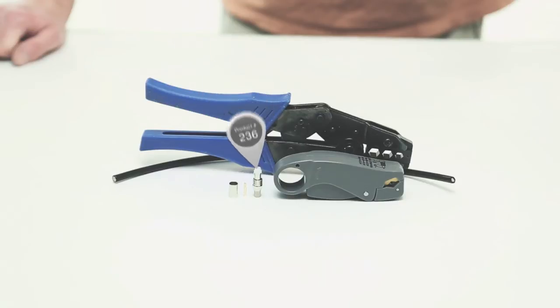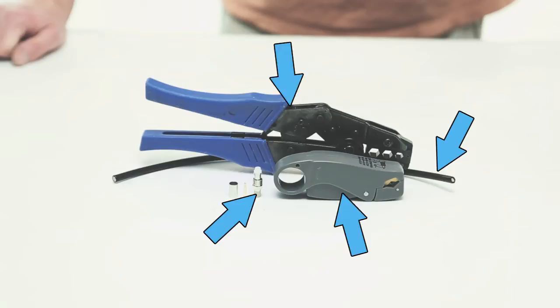For today's project we're going to need LMR240 coax cable, an FME female connector, coax stripper, and a crimp tool.